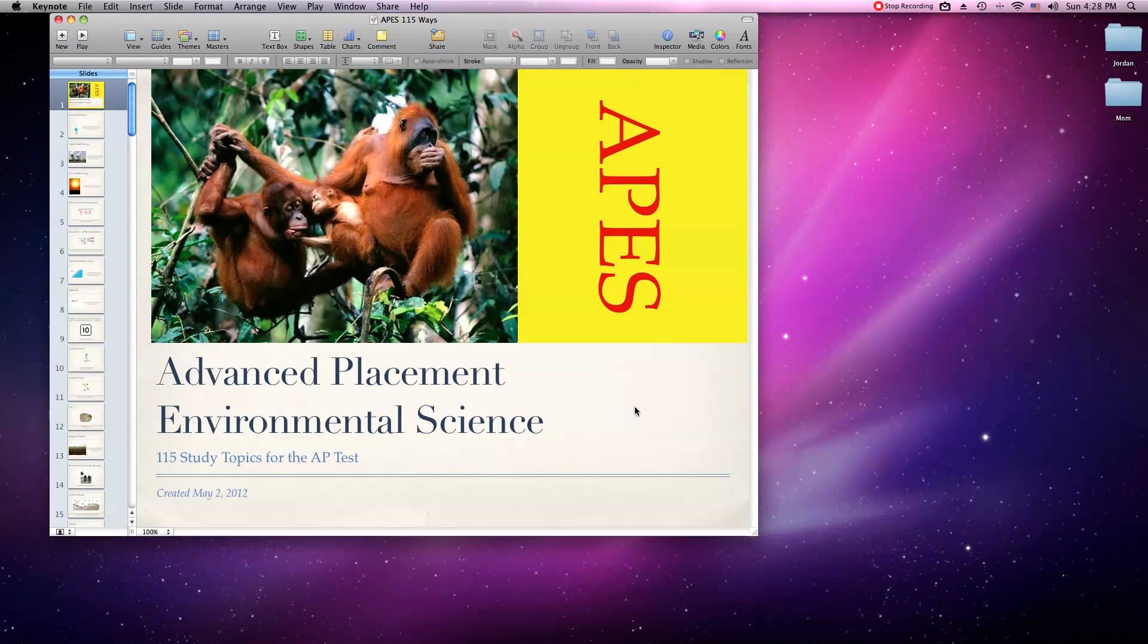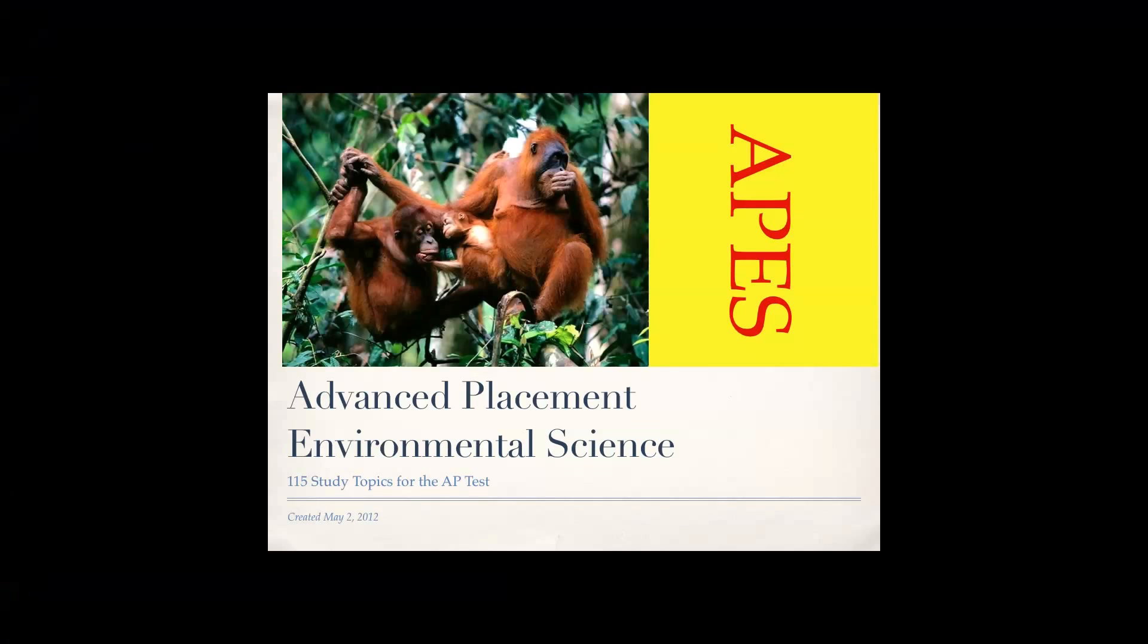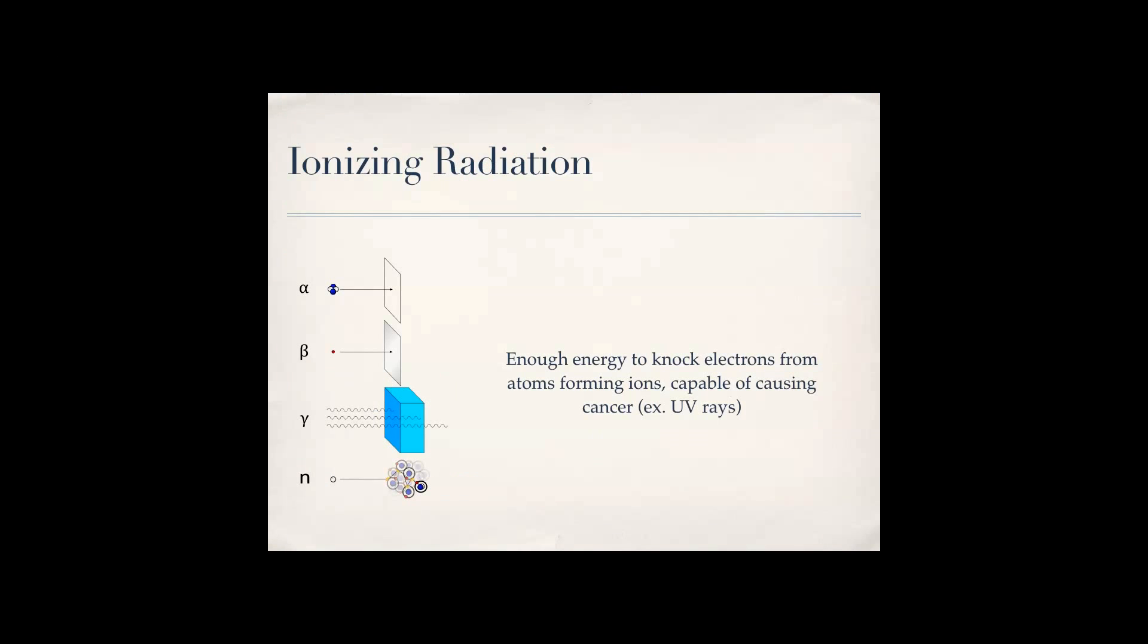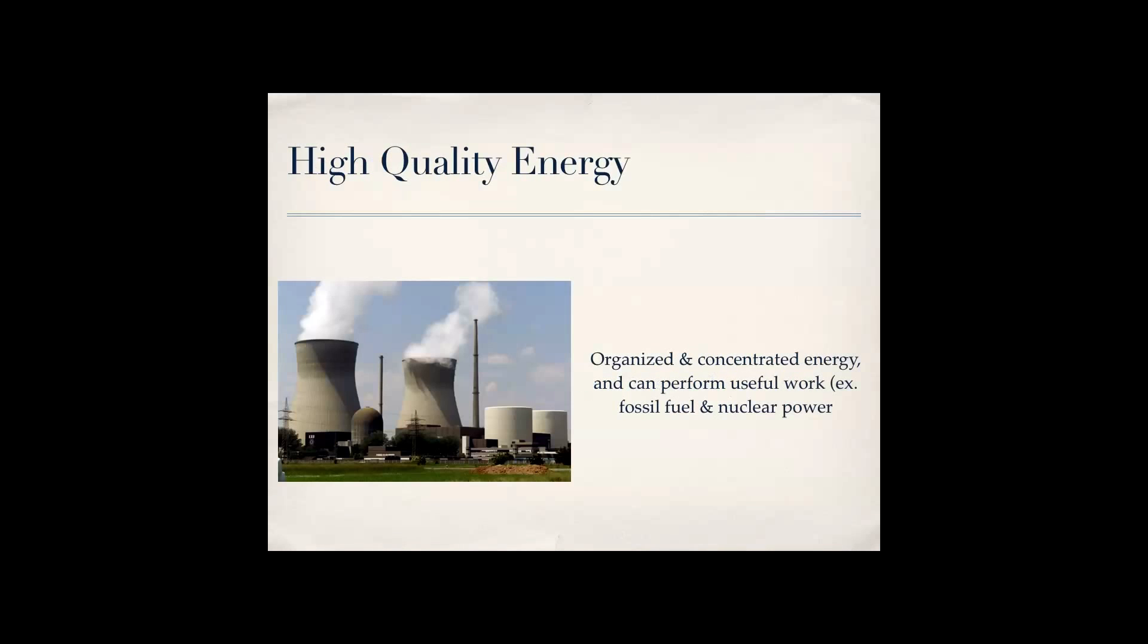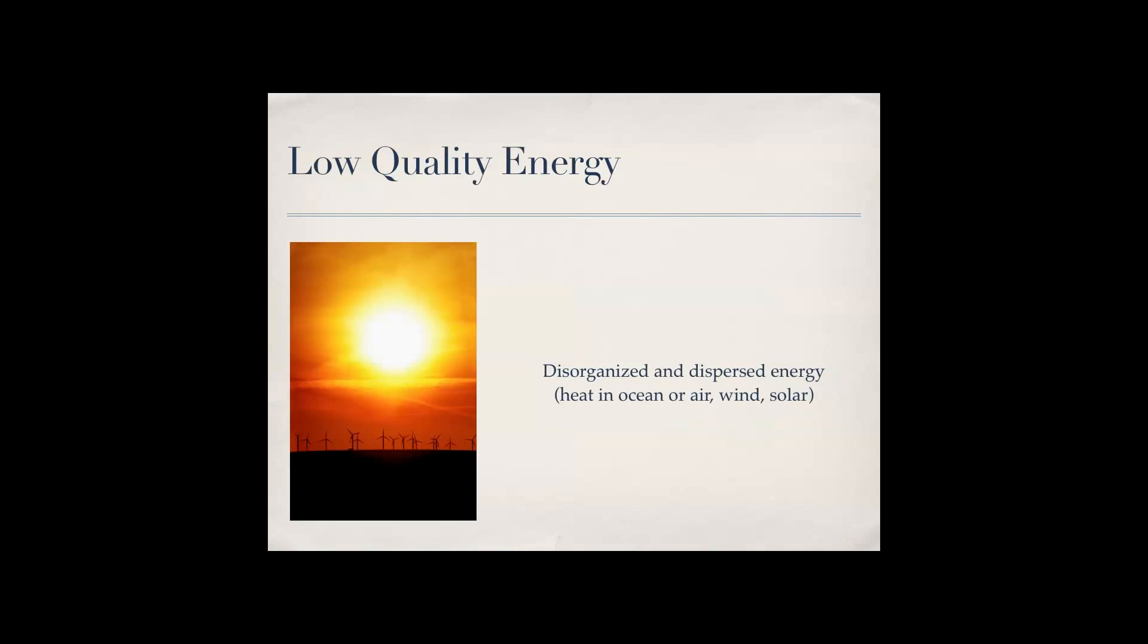Ionizing radiation is having enough energy to knock electrons from atoms forming ions, capable of causing cancer, basically self-explanatory, kind of like UV rays. So high quality energy is energy that is concentrated, like it can actually do work, but low quality energy is dispersed, it's disorganized, it's just like heat in the ocean, the air, wind.